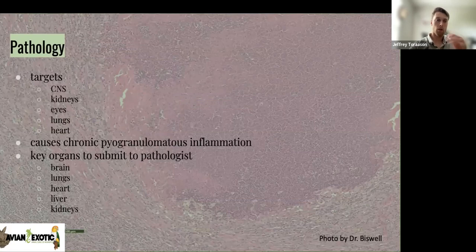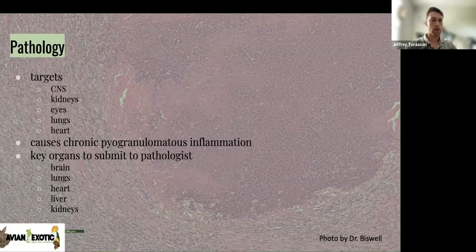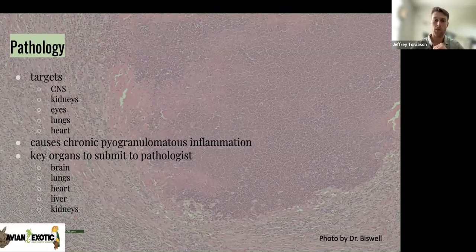Pathology. Our targets of this organism include the central nervous system, brain, spinal cord, kidneys, eyes, lungs, and heart — lots of different places. It causes a chronic pyogranulomatous inflammation, which is what we see in the background — that's a nice pathology slide of that.